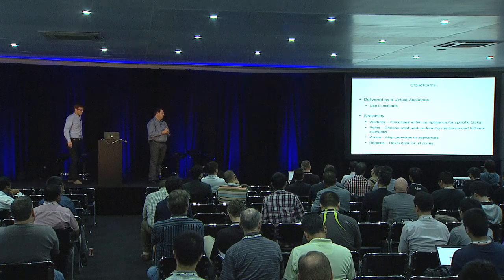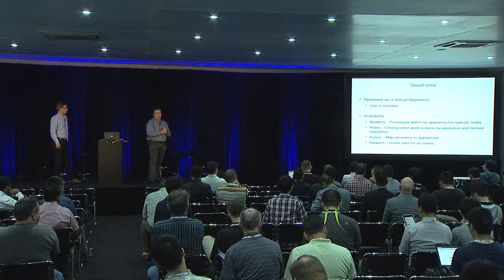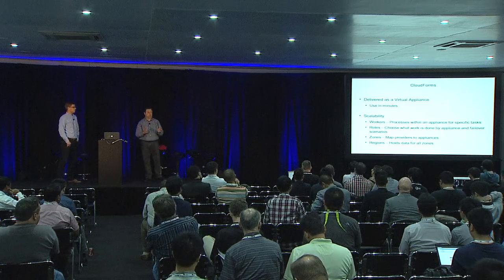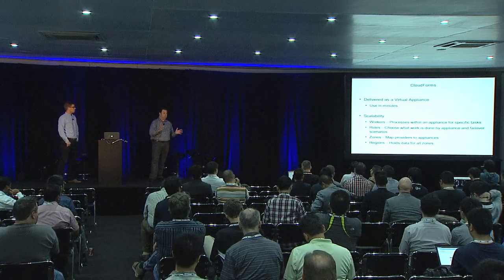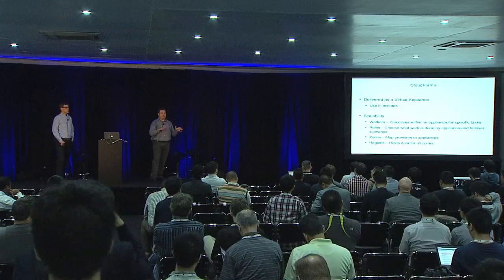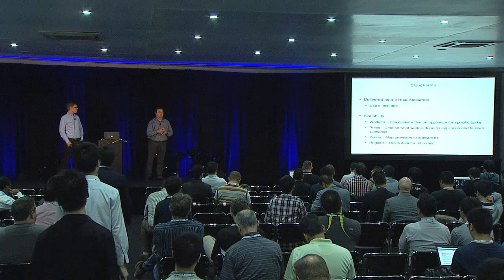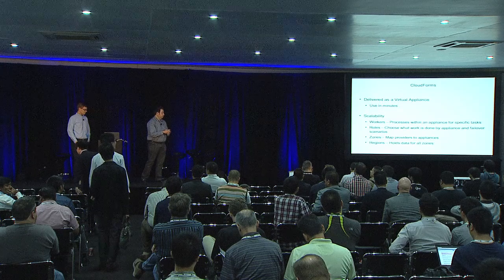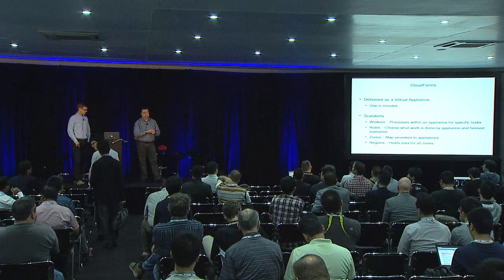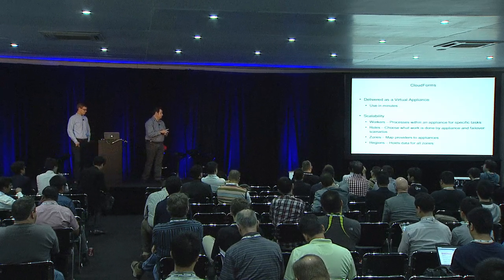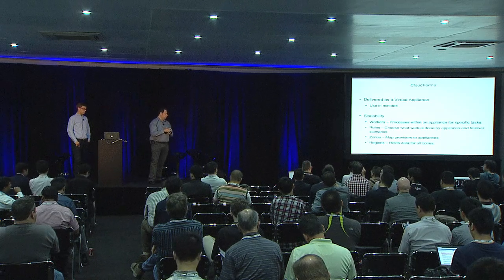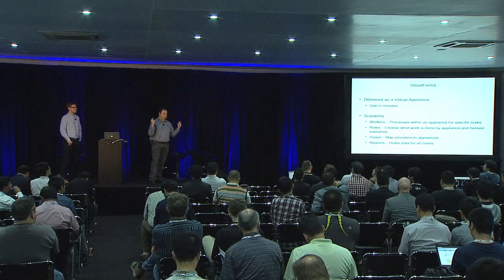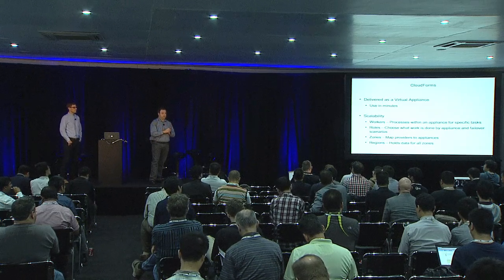There's a notion of zones within CloudForms, which allows you to map providers to appliances. For example, if you have one OpenStack instance and want three appliances to point at it for different things, you can configure that. There's also a notion of a region which holds the data for all the zones, and you can do multi-regioning with replication up to a master region for reporting across many different CloudForms installations.